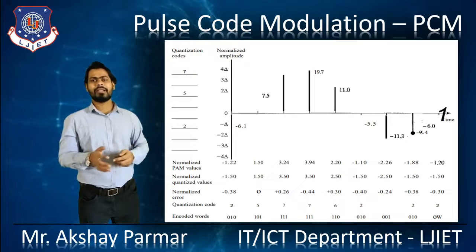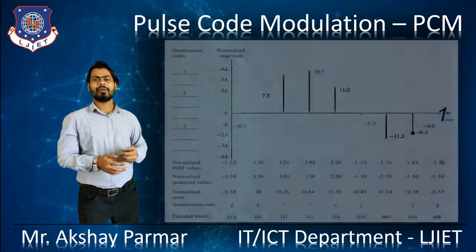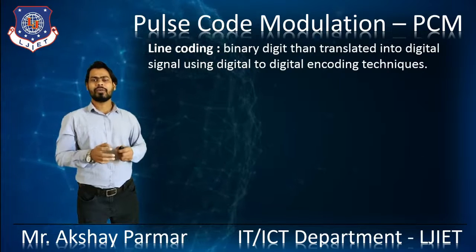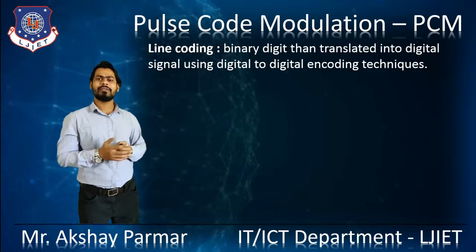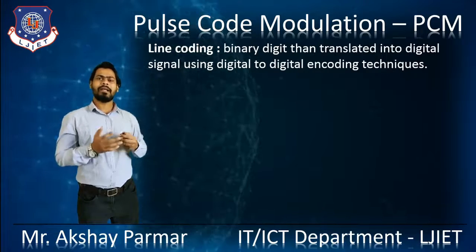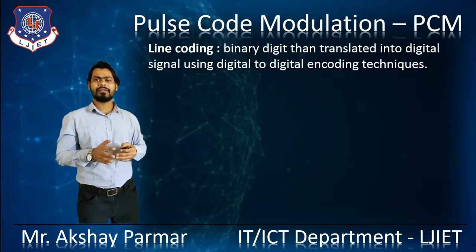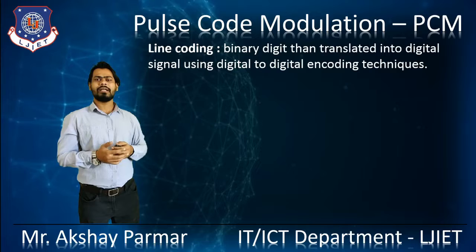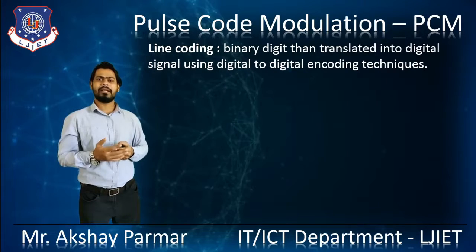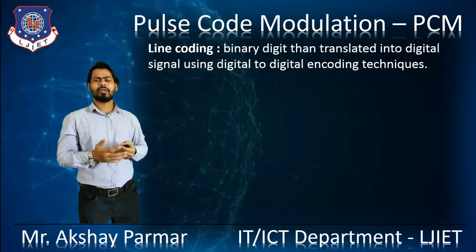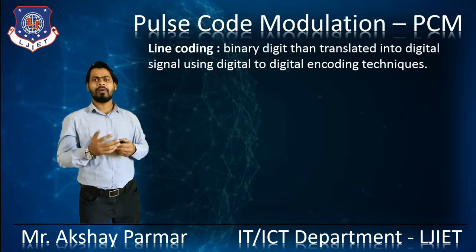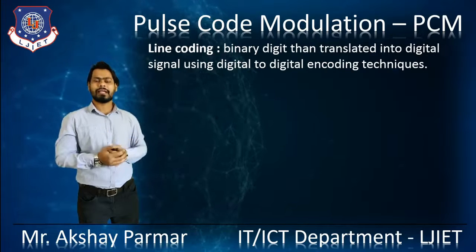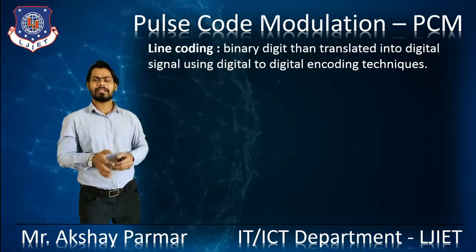After sampling and quantization, the encoded code is given to the line coding techniques. Line coding takes the binary digits obtained from the quantizer and translates them into a digital signal using digital-to-digital encoding techniques. Line coding techniques have various types: NRZ (with subtypes NRZ-L and NRZ-I), RZ (Return to Zero), and the Biphase technique (with subtypes Manchester and Differential Manchester). We have seen line coding techniques in brief in our previous sessions.